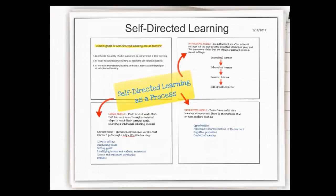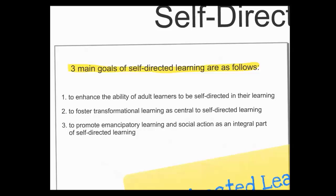There are three main goals of self-directed learning. The first is to enhance the ability of adult learners to be self-directed, grounded in humanistic theory — the belief that human beings have an innate goodness, a higher self, and a wish to improve themselves and self-actualize. The second goal is to foster transformational learning, where adults reflect critically, participate freely, test themselves, and modify their learning based on experience. The third goal is to promote emancipatory learning and social action — for example, women advocating for better learning opportunities in areas where girls are not valued the same as boys.